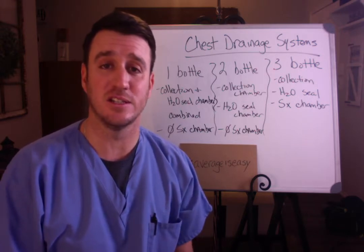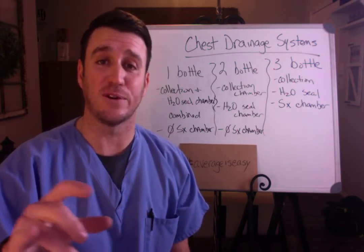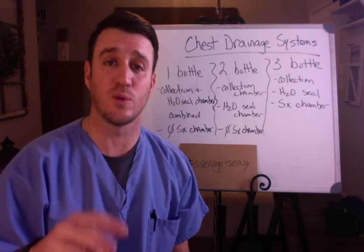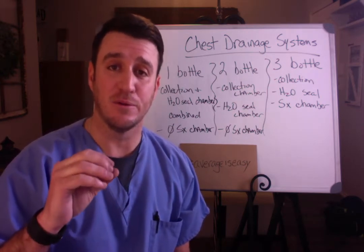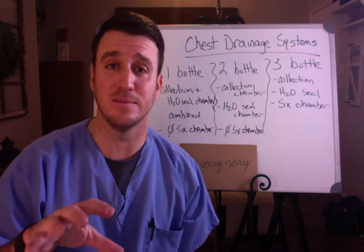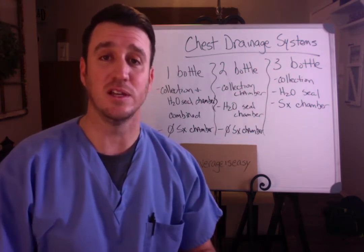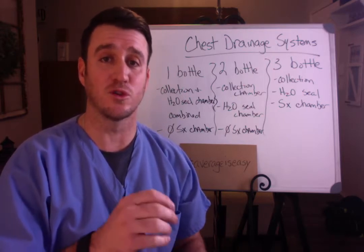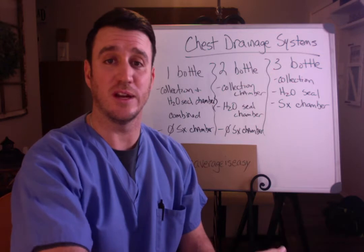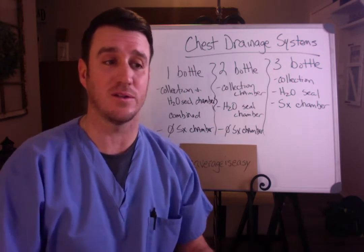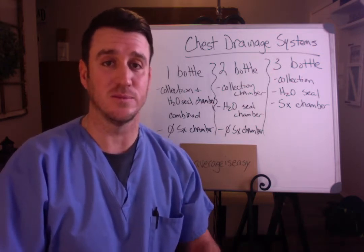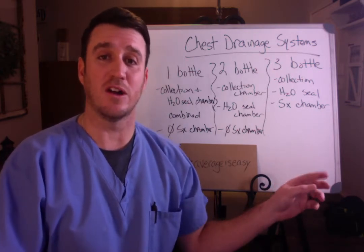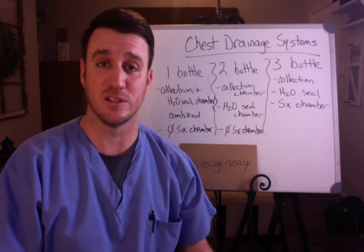Chest drainage systems break down into three different categories: a one-bottle system, a two-bottle system, or a three-bottle system. For modern day practice, most places are using plastic disposable three-bottle drainage systems — either the Pleurevac or the dry seal system — but they still operate on the same principles.